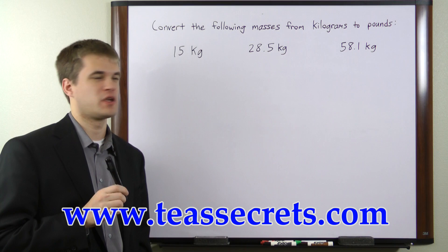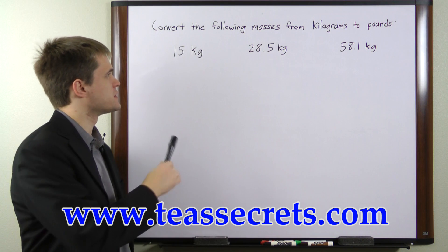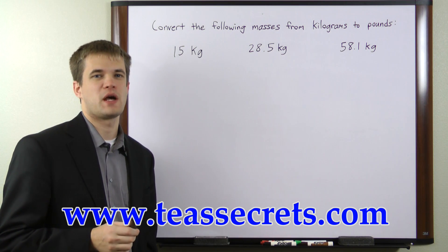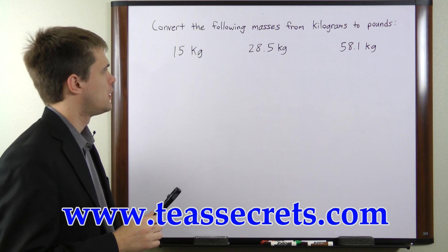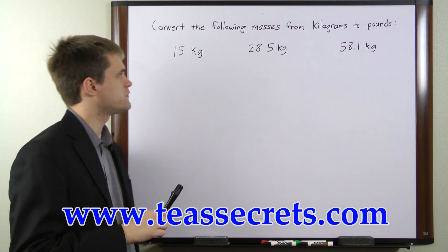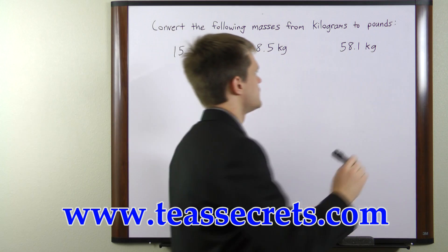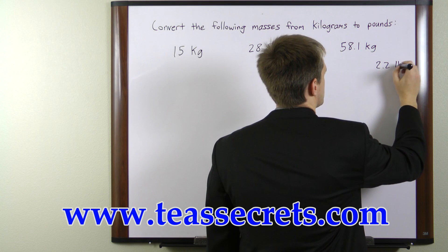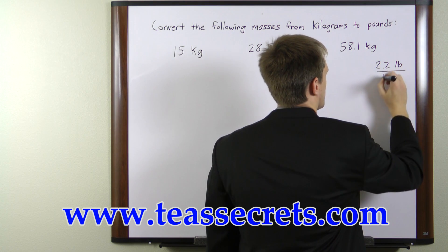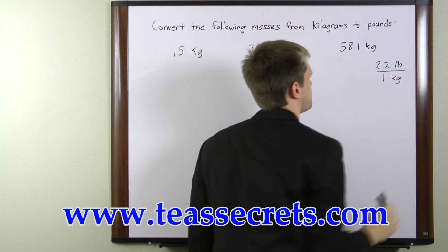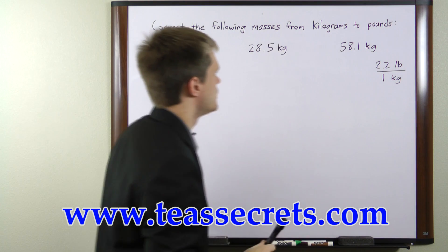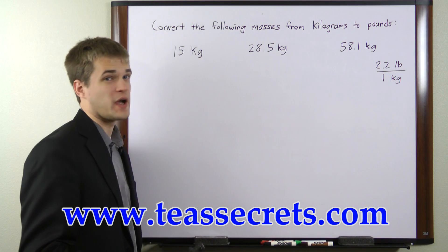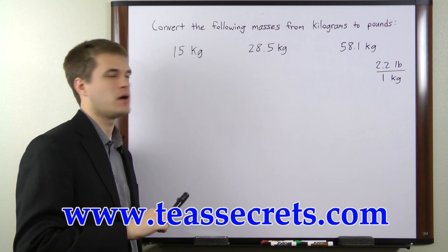In this example problem, we're given three masses in kilograms, and we're asked to convert those masses into pounds. The conversion factor we're going to use is 2.2 pounds per one kilogram. So by multiplying each of these masses by that conversion factor, we'll get our masses in pounds.